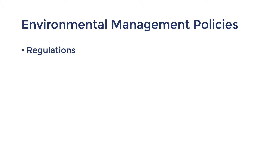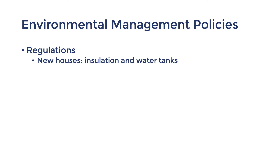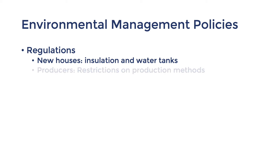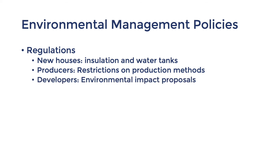Regulations are rules or laws to influence economic outcomes. To influence environmental outcomes, regulations can include prohibitions from damaging or polluting the environment. Examples include regulations requiring newly built houses to be energy and water efficient, such as forcing homeowners to pay for insulation or water tanks. On a business level, regulations could be used to restrict harmful production methods and inputs. Developers are also required to present environmental impact proposals for approval.